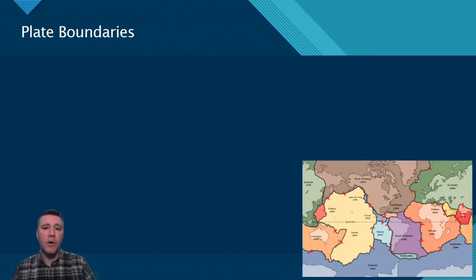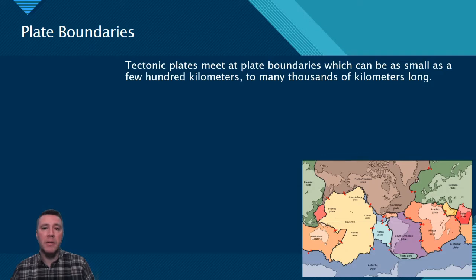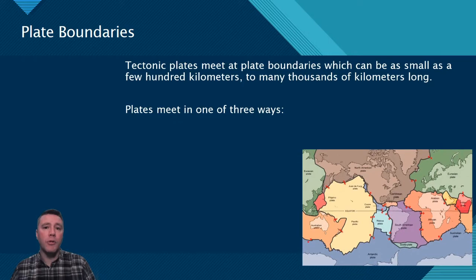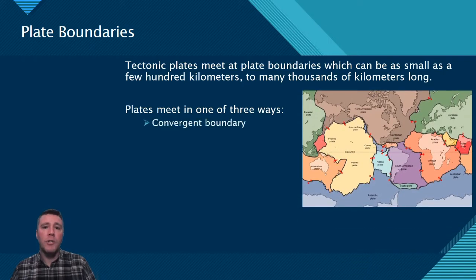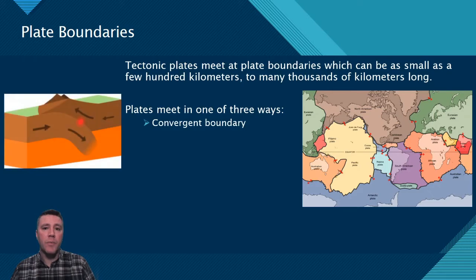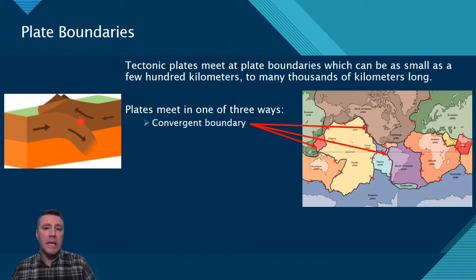Plate boundaries are the areas where two tectonic plates meet. They can be hundreds or thousands of kilometers long. There are three basic categories of plate boundaries. First is a convergent boundary, where two plates are coming together. Some examples include where the South American plate meets the Nazca Plate off its west coast, the Juan de Fuca Plate converging with the North American Plate off its northwest coast, and the Philippine Plate converging with the Eurasian Plate in the South China Sea.